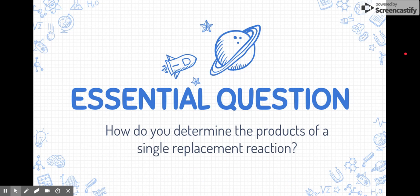Here's the essential question — please write this at the top of your page in a colored pen: How do you determine the products of a single replacement reaction?